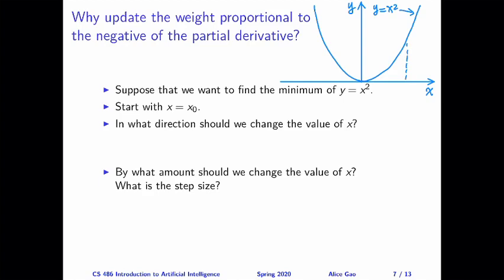Suppose we start from the right-hand side of the minimum. We start with this x0, and at this point, the derivative is positive, because the curve is increasing at that point. Now, at that point, in order to minimize the function, we want to decrease the value of x. So this means when the derivative is positive, we want to change x by the negative of the derivative, decrease it rather than increase it.